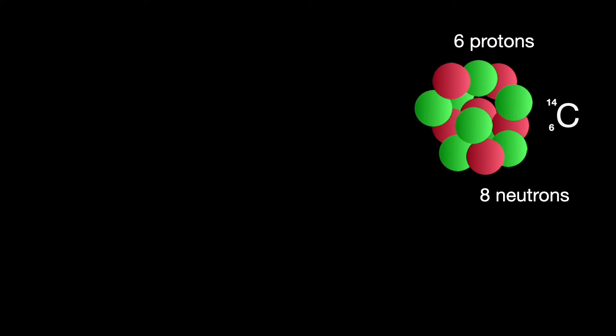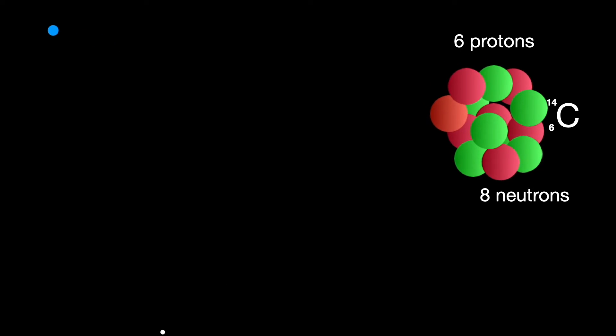It's unstable because one of the neutrons can break down emitting an electron and an anti-neutrino. Because it's emitted an electron, the particle left behind has a positive charge. It has become a proton. So the isotope now has seven protons and seven neutrons. It has become nitrogen.